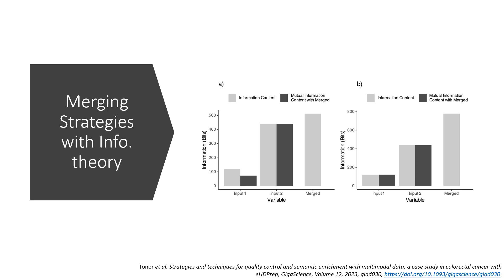Here we see a visualization of the functionality in eHDprep for informing if two variable merging operations, A on the left and B on the right, will result in information loss. Operation A is shown to result in information loss, as while the mutual information of input 2 with the merged variable is equal to its own information content, the mutual information of input 1 with the merged variable is lower than its own information content.